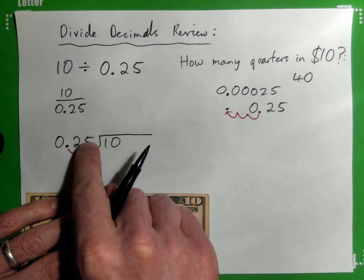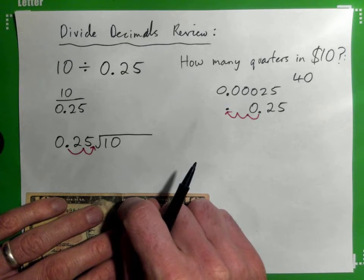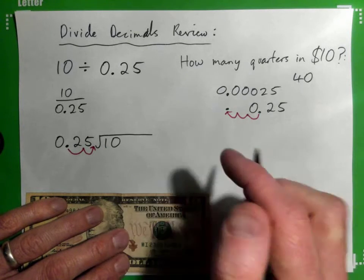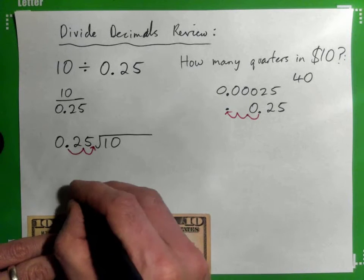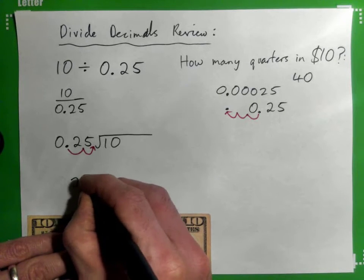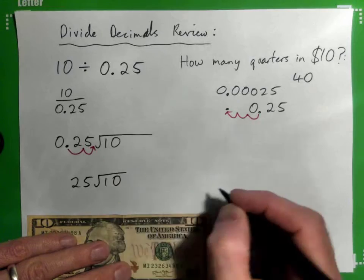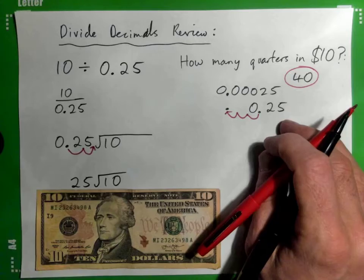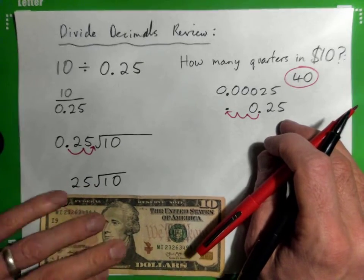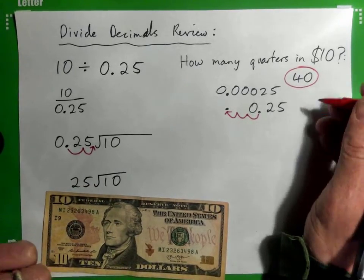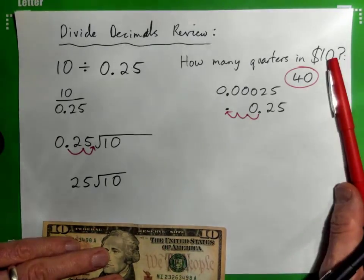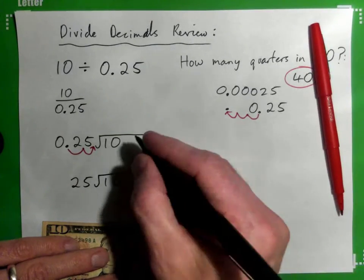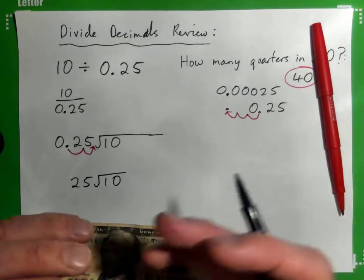Now we can't just do 25 into 10. That would obviously be wrong. 25 into 10 is not going to give us the answer 40. We know the answer should be 40 because it's 40 quarters in $10, right? This isn't going to work. So how do we make sure our answer is actually 40?